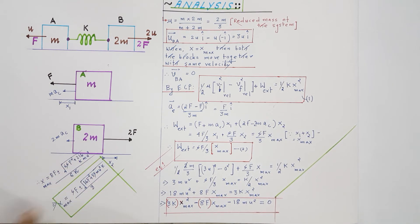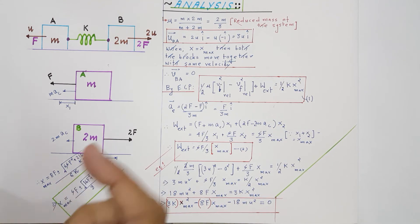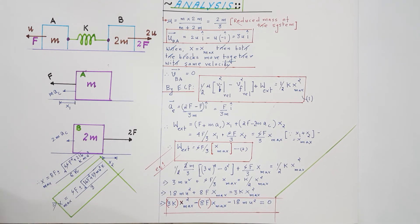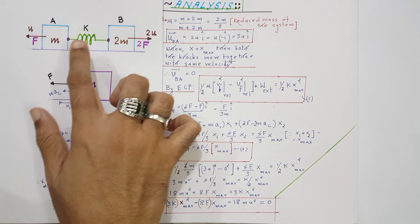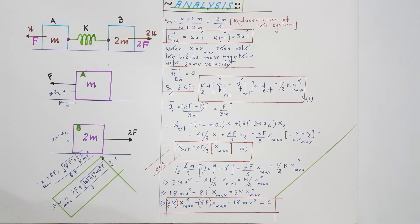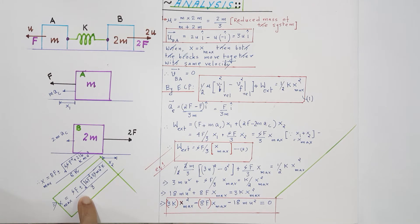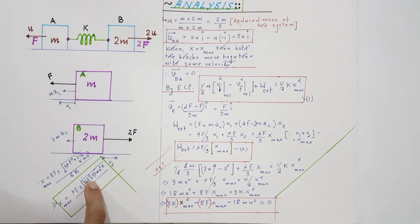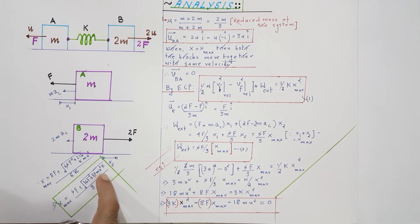Solving this quadratic equation, the maximum extension of the spring is given by x_max = (4F ± √(16F² + 54mku²)) / (3k).